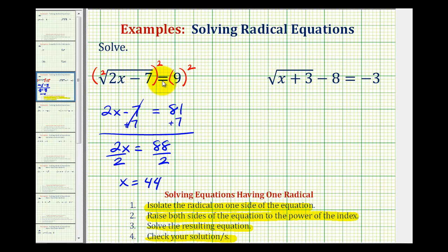And now to make sure this solution actually works, we'll substitute 44 for x into the original equation. So we would have the square root of 2 times 44 minus 7 equals 9. Well, 2 times 44 is going to be 88. 88 minus 7 is 81. So we have the square root of 81 equals 9. And since the square root of 81 is equal to 9, our solution works, and therefore our solution checks.